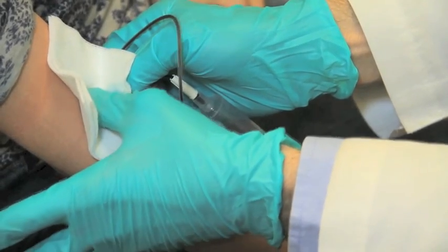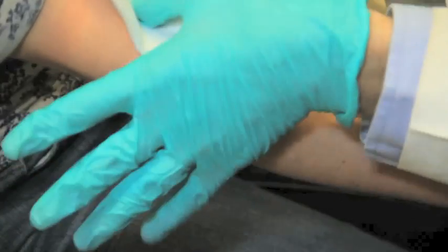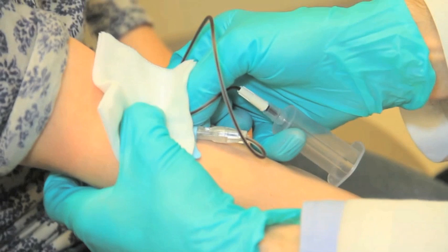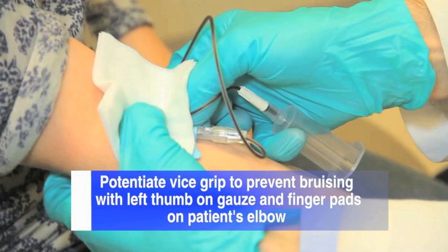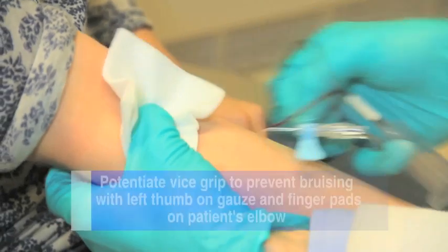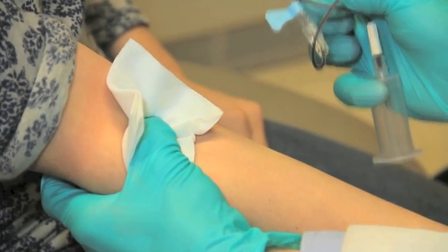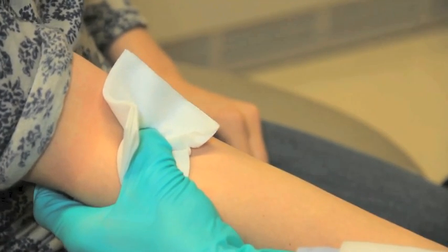Next, place gauze over the inserted needle without applying pressure. The gauze should be stabilized by your left thumb while the second, third, and fourth fingers are positioned at the elbow, potentiating a vice grip. Remove the needle and as soon as it is safely out of the way, exert pressure on the vein with the vice grip. The most common cause of bruising from phlebotomy is inadequate pressure upon needle withdrawal. When adequate pressure is applied, blood is less likely to ooze under the patient's skin in form of bruise.